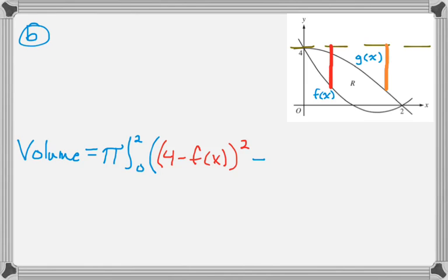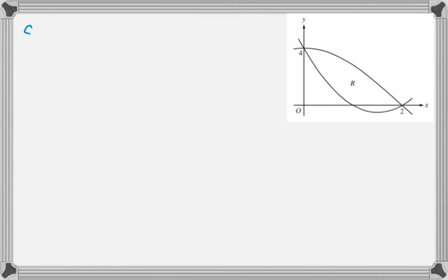Minus my little radius, which is the axis minus g(x). So the quantity (4 - g(x))² and dx. We don't have to evaluate, so we're done with that.